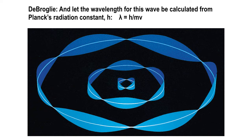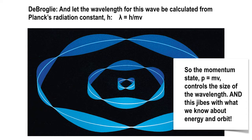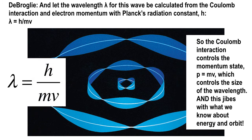Lambda equals Planck's constant divided by momentum, mv. De Broglie came up with this equation: divide Planck's constant by the momentum and that gives you a wavelength. When you work it all out, it corresponds to the photon energies when electrons drop between energy levels, and with the Coulomb interaction it all works. Think of the electron as a wave; compute the wavelength as h over mv.